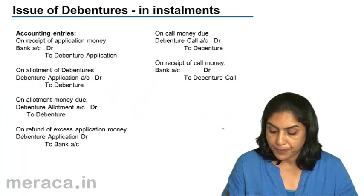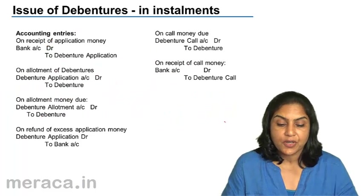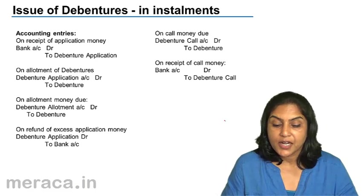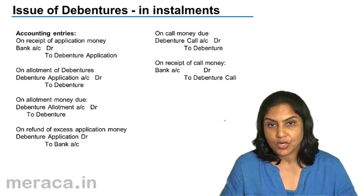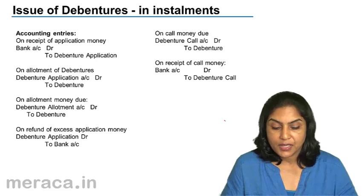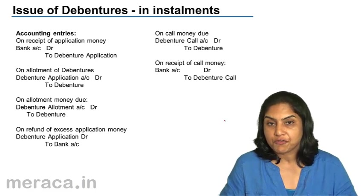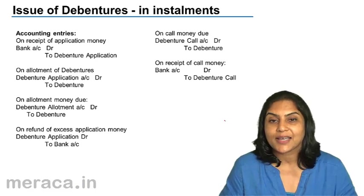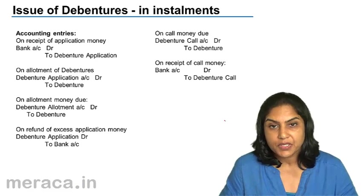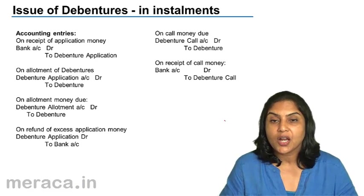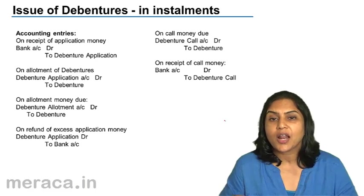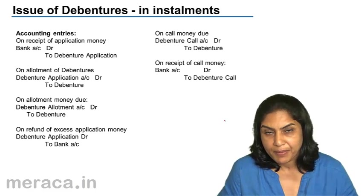Just to mention, as in the case of shares, debenture issue may also be in installments. There may be application, in which case the first installment is called application, second is allotment, third is first call and second call, third call — as many calls as there may be.